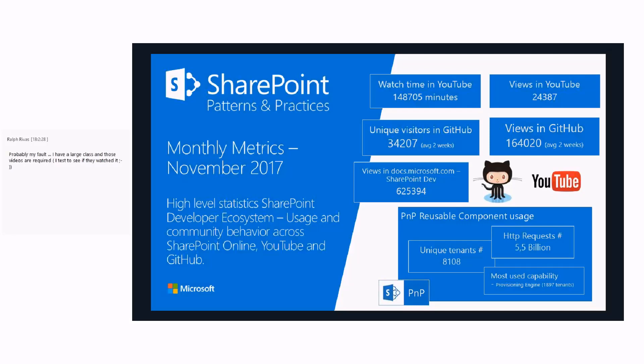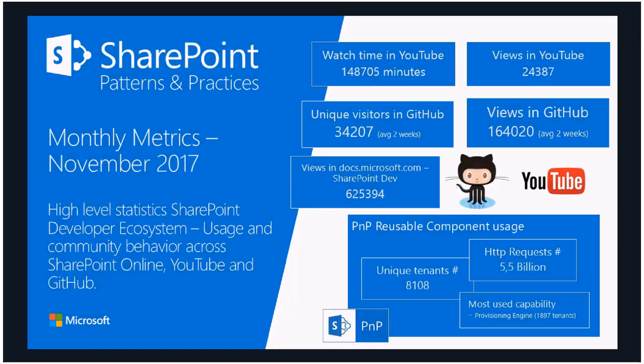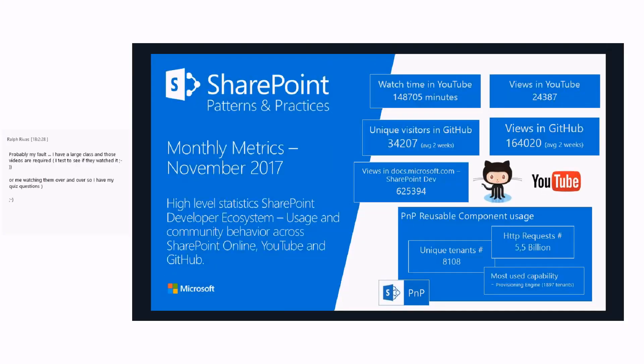On the PnP reusable components usage: a few years back PnP only meant PnP PowerShell and PnP Core. We've been tracking the usage of these components — they now generated 5.5 billion requests during last month and were used in 8,100 tenants. The most used capability from an open source community perspective was again the provisioning engine, used either through PnP PowerShell or using the CSOM Core as the platform.